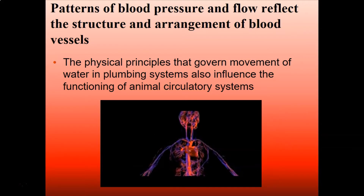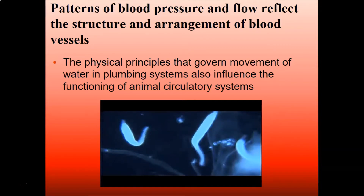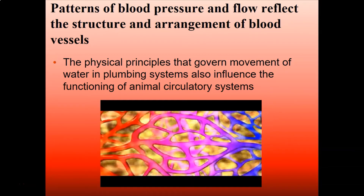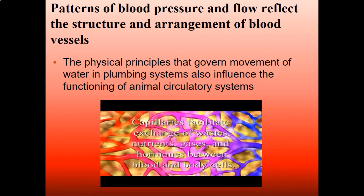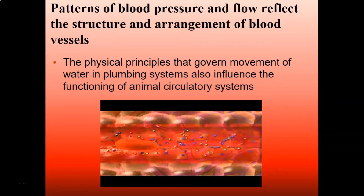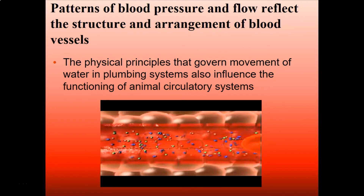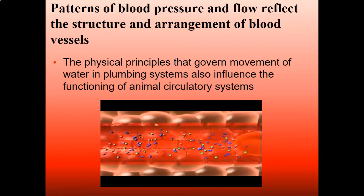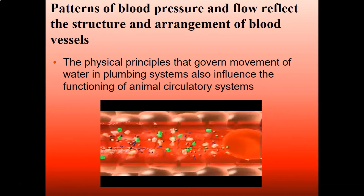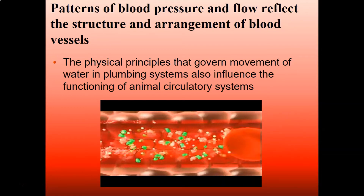Our circulatory system is designed to provide each of our cells with a type of diffusion exchange practiced by simple unicellular organisms living in aquatic environments. This exchange occurs at the level of the tiniest blood vessels — capillaries — where wastes, nutrients, gases, and hormones are exchanged between the blood and the body cells. With walls only a single cell thick, capillaries are well adapted to their role of exchange. Most nutrients, oxygen, and carbon dioxide diffuse readily through capillary cell membranes. Salts and small charged molecules, including some small proteins, move through fluid-filled spaces within or between adjacent capillary cells.